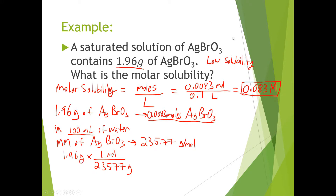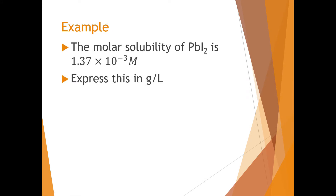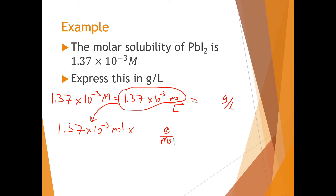Another example would be if we are given the molar solubility of a substance and asked to express it in grams per liter — that is, to find the mass solubility. Here we're given that the molar solubility of lead iodide is 1.37 times 10 to the negative 3 moles per liter. All we have to do is convert the moles to grams per liter by multiplying by the molar mass of lead iodide. So moles to grams.